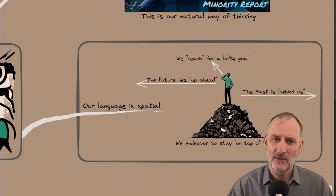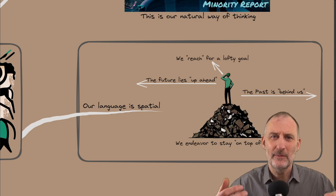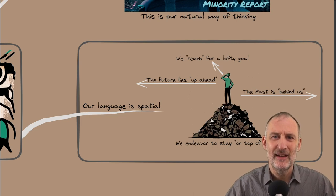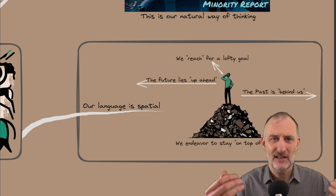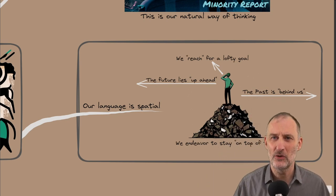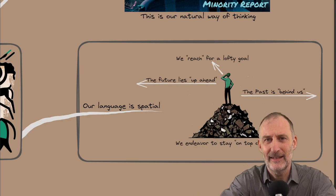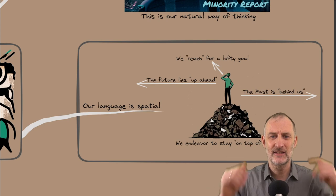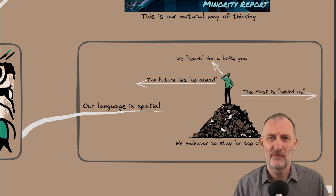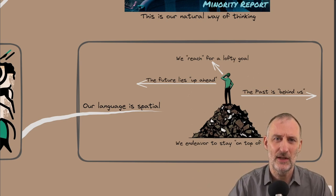So let's look at some of the additional theory. So first of all, the language we use, the way we speak, is an evidence of our spatial thinking. Because we reach for a lofty goal, the future is in front of us, or it's up ahead, the past is behind us, and we endeavor to stay on top of things. Just a couple of examples of how our language represents our spatial thinking.